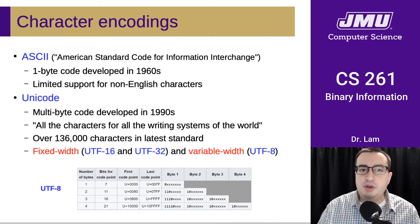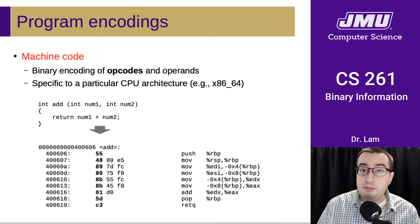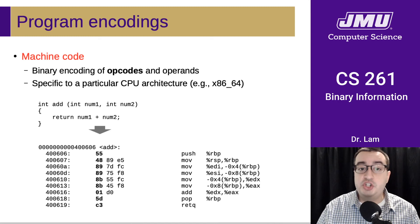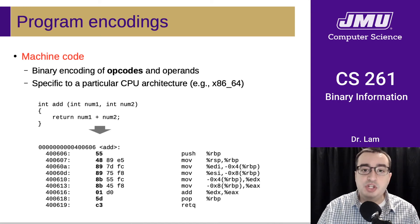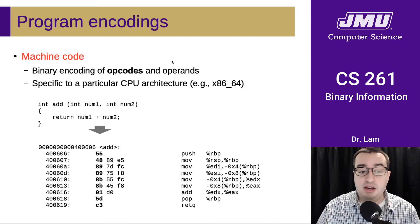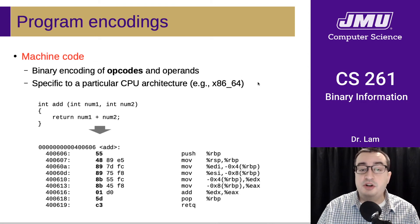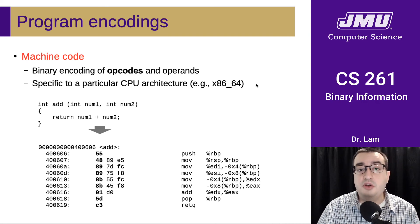The other kind of data we want to be able to represent in binary is actual programs — computer code. This is called machine code: a binary encoding of an instruction, which includes information about what operation to perform, called the opcode, and what information for that operation to act on, called the operands. These are generally specific to a particular architecture — for instance, Stu is an x86-64 machine, so programs encoded for that architecture generally won't work on computers with a different architecture.